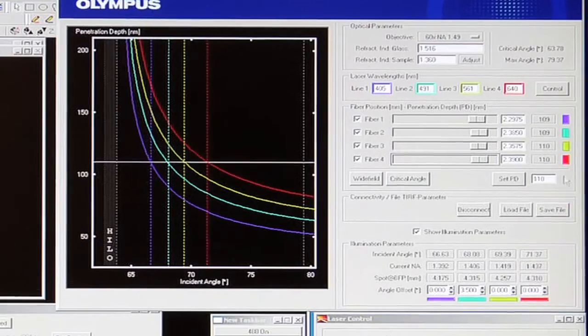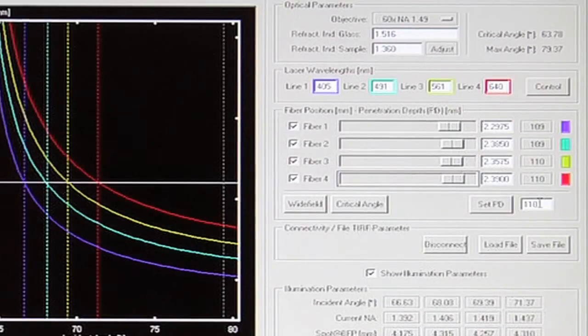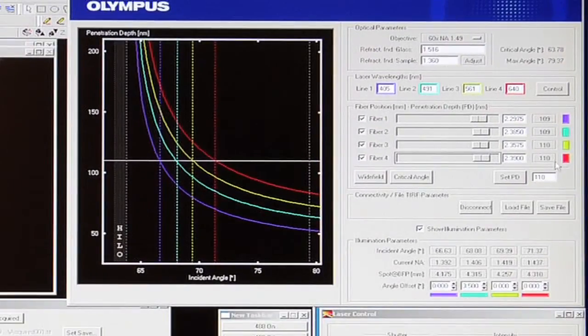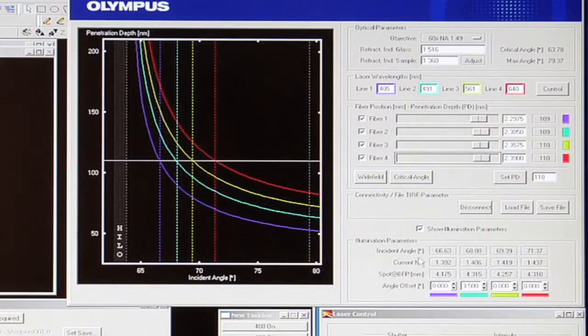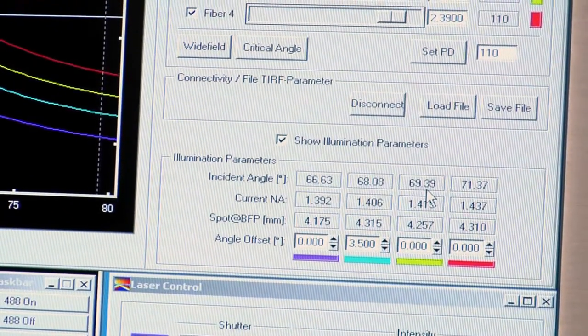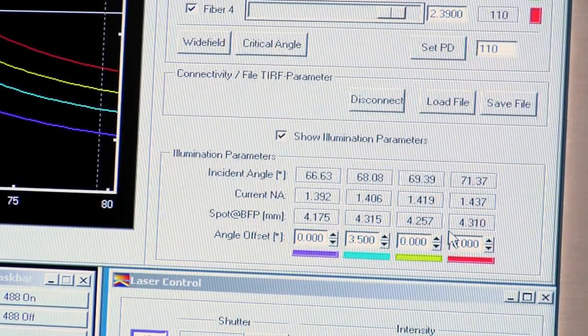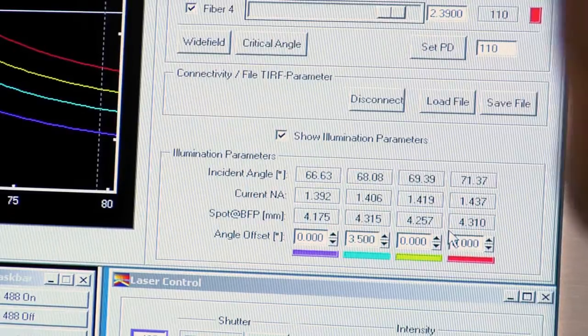Something that is nice is we're able to go in here and select a predetermined calculated penetration depth based on the parameters that are set up. So right now it's set at 110 nanometers. Just by clicking set penetration depth calculates or sets up such that each wavelength is at the appropriate incident angle, which is read down here. You can see 66.6, 68, 69.39 and 71.4. So this really demonstrates the need to be able to have individual control.